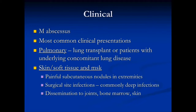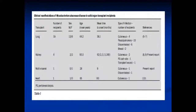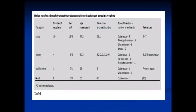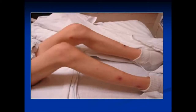Skin findings usually include painful subcutaneous nodules that can appear on the extremities but also at surgical sites, where most reports associate them with deep complex infections and dissemination. This slide shows a table from one of the reviewed studies: in 19 lung transplant infections, most were pleuro-pulmonary, followed by dissemination, cutaneous, and other infection types. The following images show typical appearance of skin nodules on the extremities.